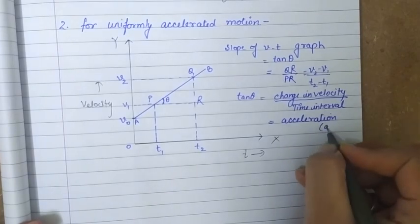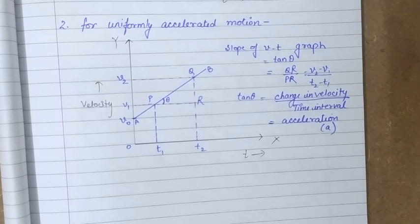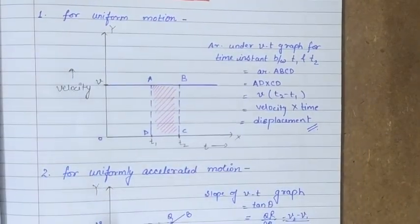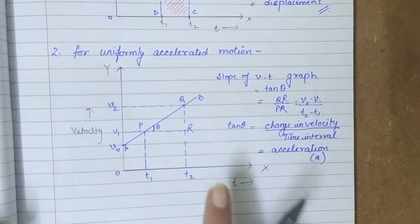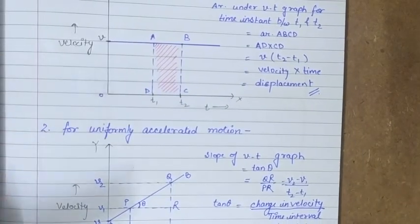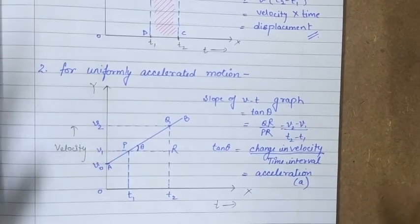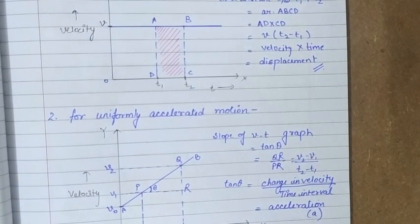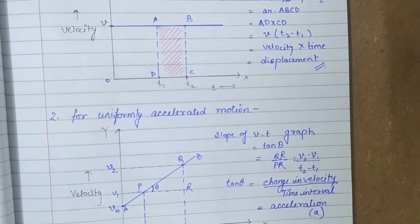We conclude that the slope of the velocity-time graph for uniformly accelerated motion gives the acceleration of the object. So for uniform motion, the velocity-time graph gives displacement as the area under the graph, and for uniformly accelerated motion it gives acceleration as the slope of the graph. That was all about velocity-time graphs for a moving object. Stay tuned and keep studying, thank you.